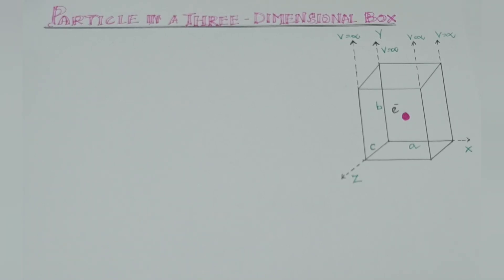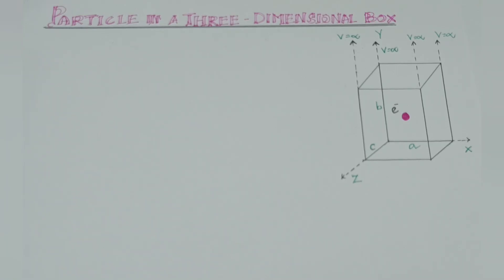Welcome. I am going to talk about the topic: particle in a linear 3-dimensional box. The particle in a 1-dimensional box is an extension. 3-dimensional means there are 3 dimensions, that is x, y, and z directions. In the 1-dimensional case we discussed only one direction, whether x, y, or z. Here we discuss all 3 directions. That is why this is the particle in a linear 3-dimensional box.